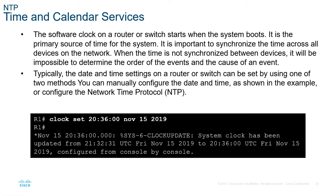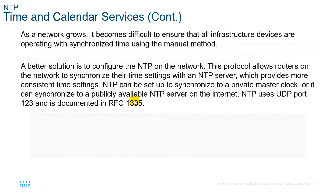Typically, date and time settings on a router or switch can be set using two methods. You can manually configure it using 'clock set' — for example, setting November 15, 2019. However, as the network grows, it becomes difficult to keep all infrastructure devices synchronized manually, which is why we use NTP.